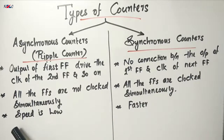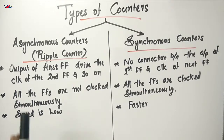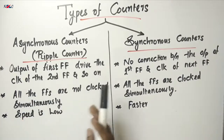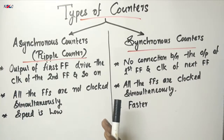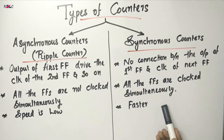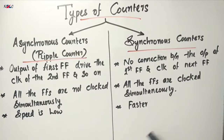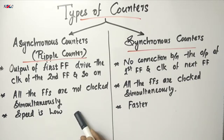Another difference is that the asynchronous counter's speed is low. Each stage of a flip-flop can work only after the previous flip-flop has produced its output, making it slower. In the case of synchronous counters, all the flip-flops are triggered simultaneously, so it is faster compared to the asynchronous counter.